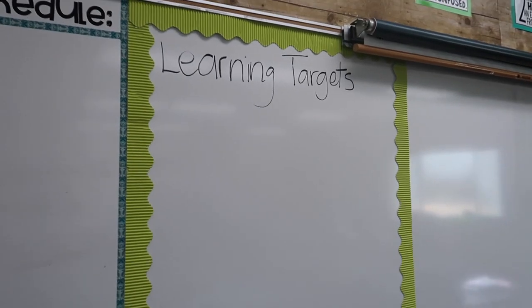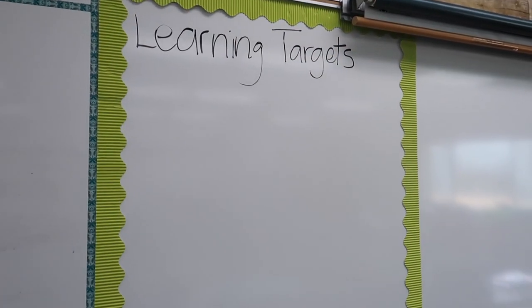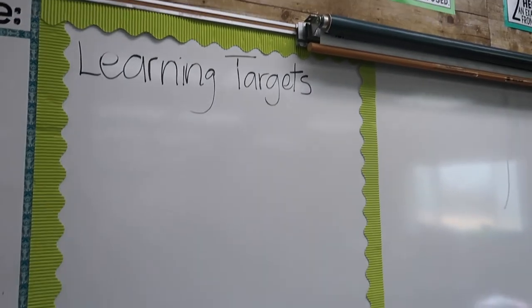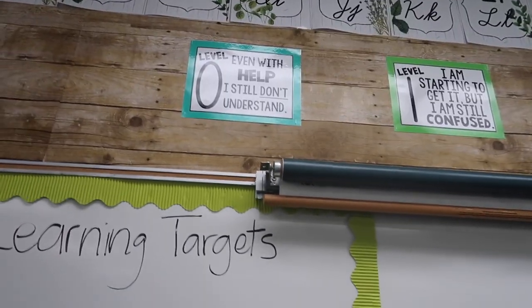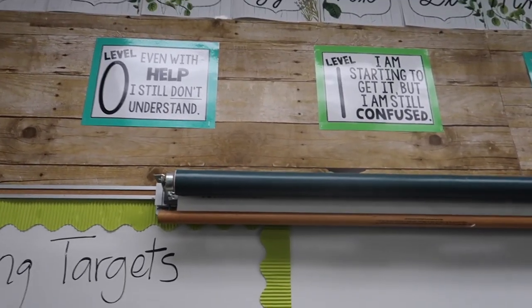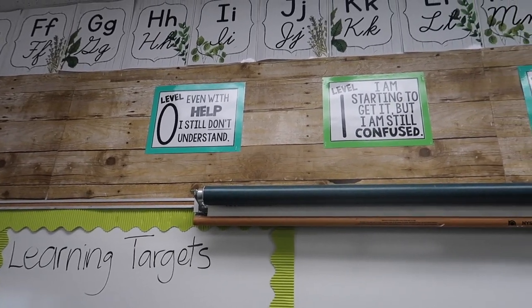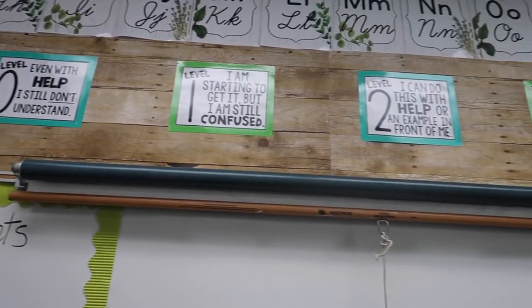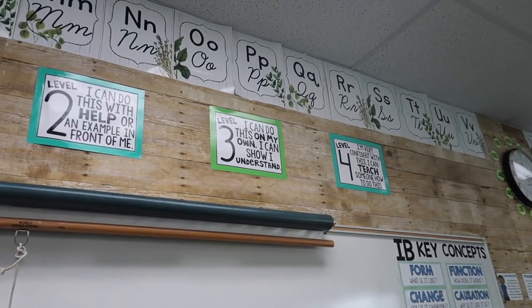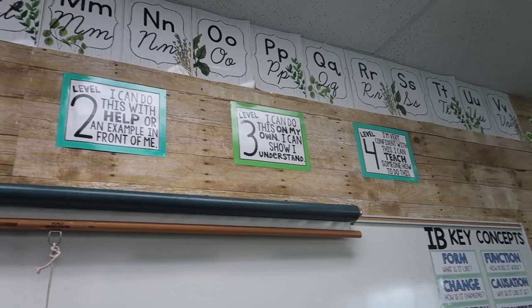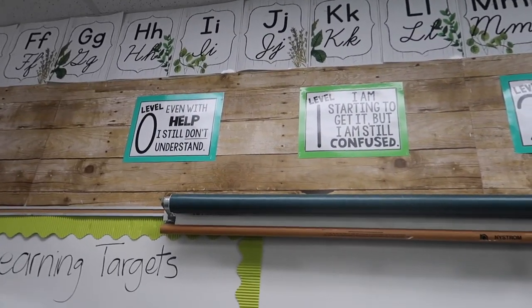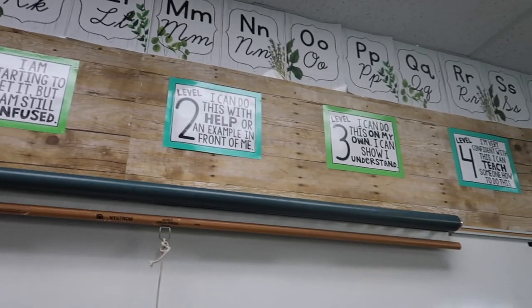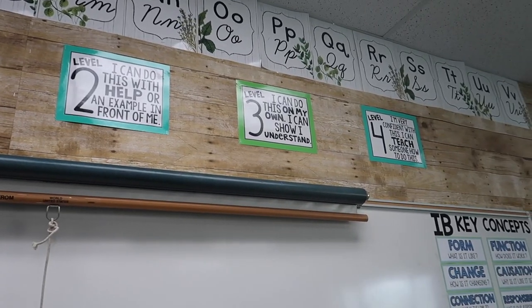This is where my learning targets are going to go — I just wrote that so I could space it out. I put up these posters that are levels of understanding that I got off TPT from Miss Fifth. They're awesome. I just printed them in black and white and then backed them on blue and green. Levels 0 through 4, which I really like. I'm going to try and be better at this this year.